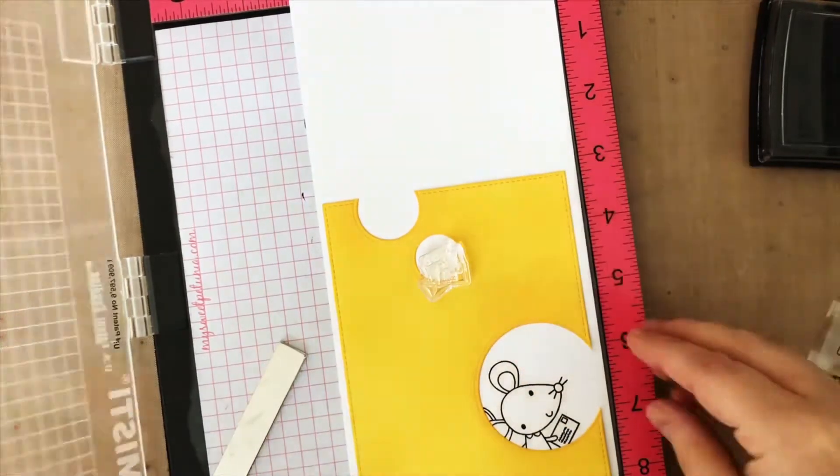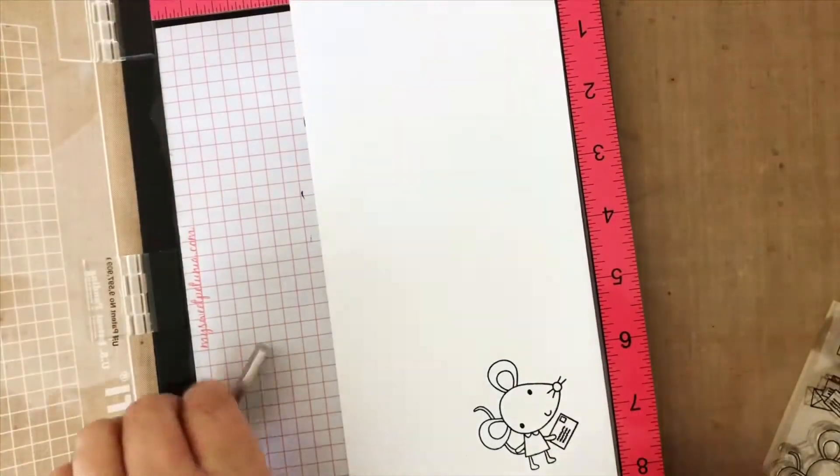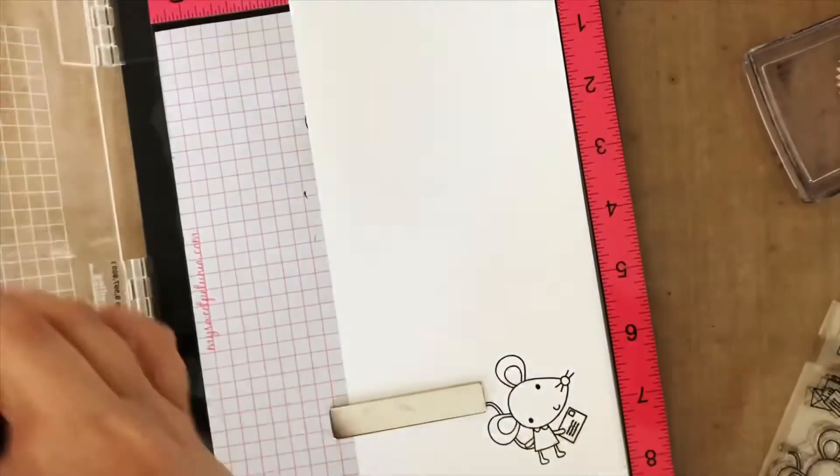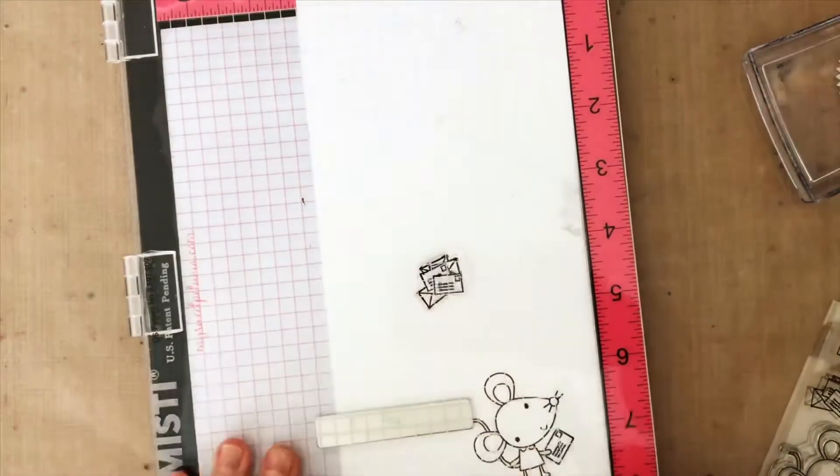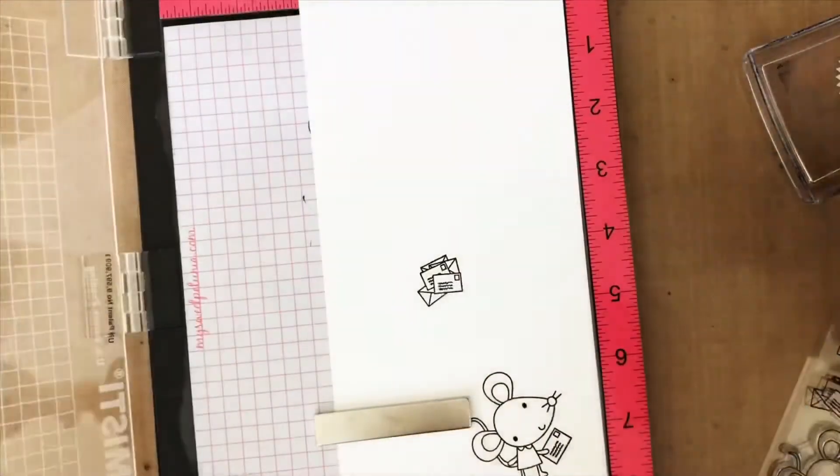Then I repeated those steps with the little Happy Mill and finished by coloring my little images with Copic markers, which I will not make you watch because I'm still learning and it's kind of painful.